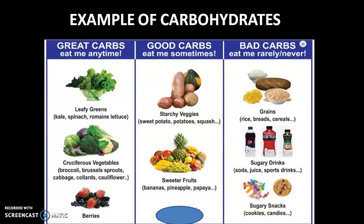Bad carbs should be eaten rarely or never. Grains like rice, breads, and cereals are our staple food, so we cannot avoid them entirely, but we should eat them in limited quantities. Sugary drinks like soda and sports drinks should be avoided — they are very bad carbs, and doctors warn that children today are developing diabetes because of excessive intake of bad carbohydrates. Sugary snacks like cookies, candies, pastries, and cakes also fall under bad carbs and should be taken rarely — perhaps once a month.